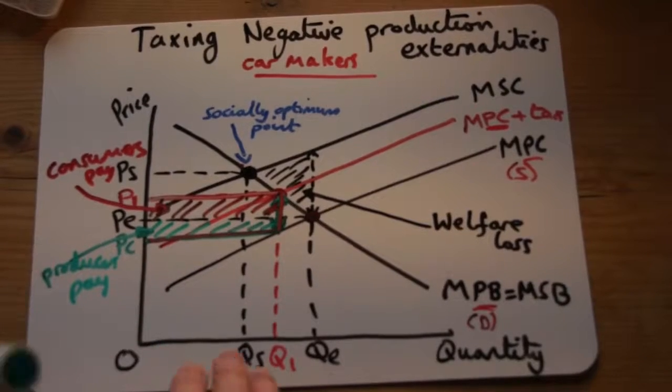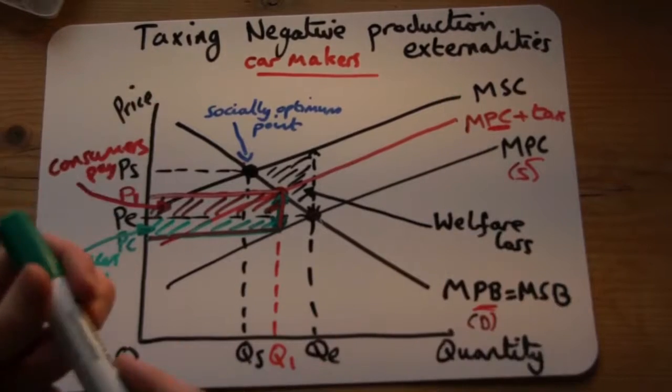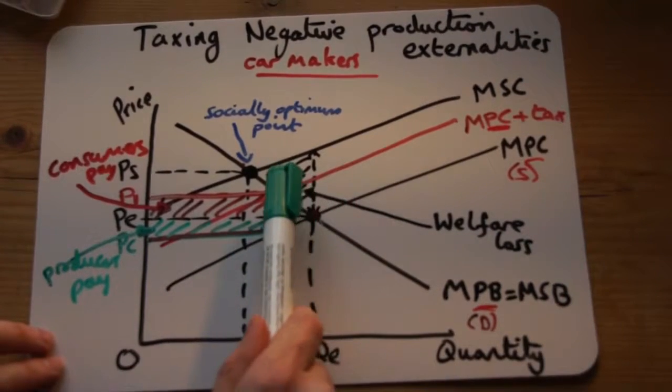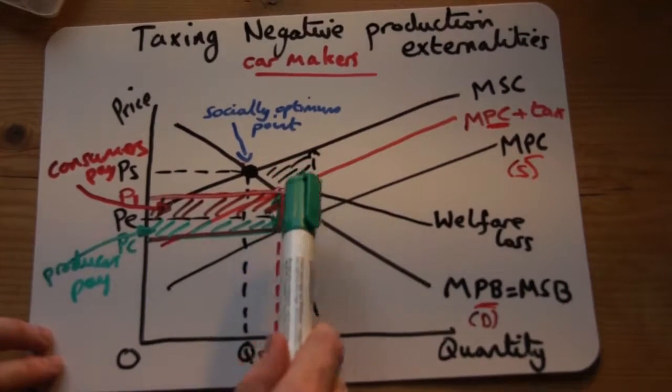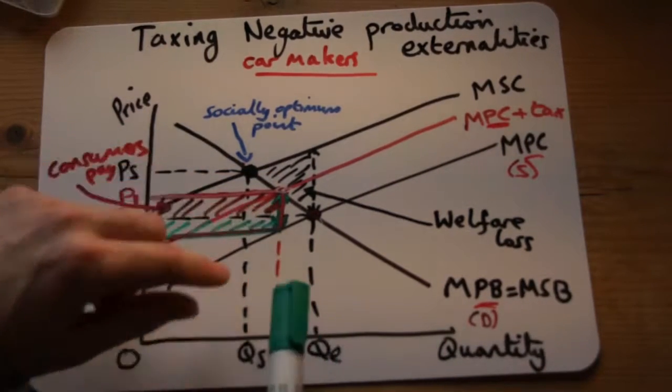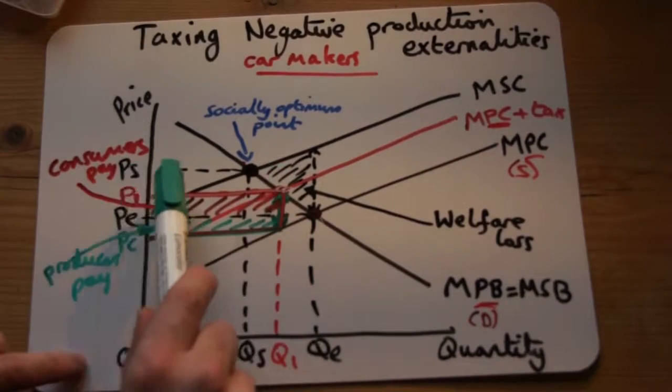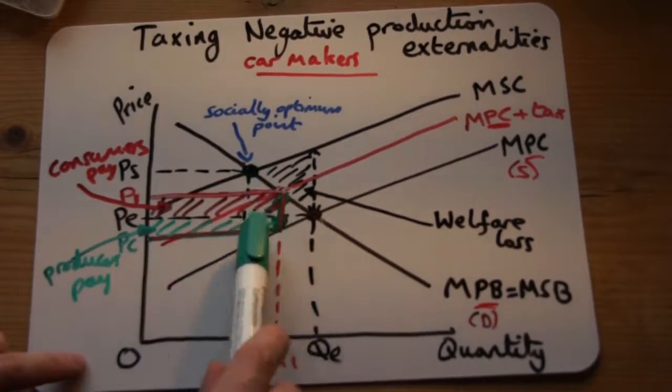So what we see here is we have the old equilibrium where supply equals demand. They put on a tax, so then we push the supply line upwards to get the new equilibrium. The tax is from the new equilibrium to the old supply line at that quantity level. We go to the supply line plus the tax, and then we go across to the price axis to get the new price and where the tax line hits the supply line.